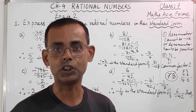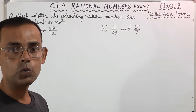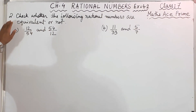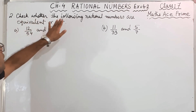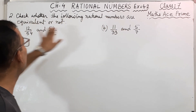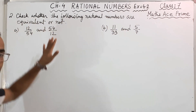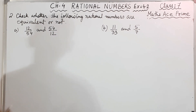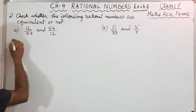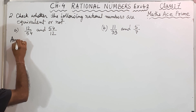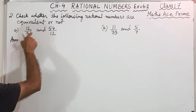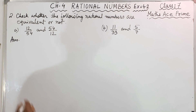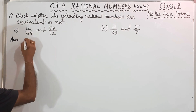Now we will move on to the next question — question number 2. Check whether the following rational numbers are equivalent or not. So how will we say that it is equivalent or not equivalent? Number A: 12 by 54 and 54 by 12. So let us do this one.